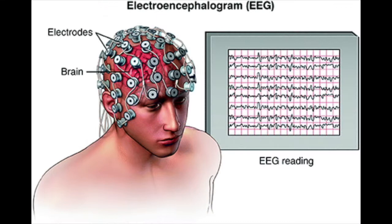The electrical activity in the brain can be observed through an EEG recording. When electrodes are placed on a person's scalp, they detect brainwave activity, which is recorded on a chart. The EEG is used to assess brain damage, epilepsy, and other problems.